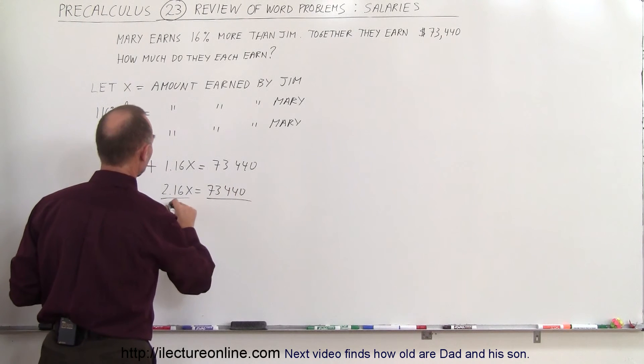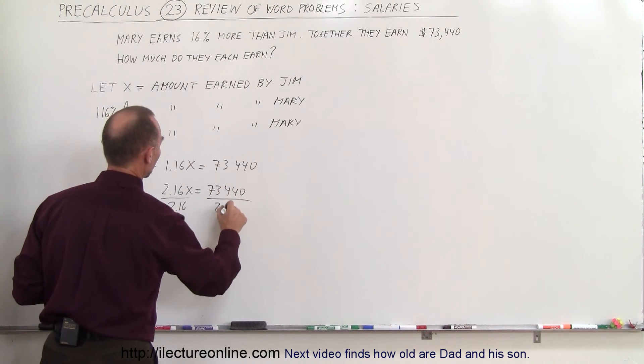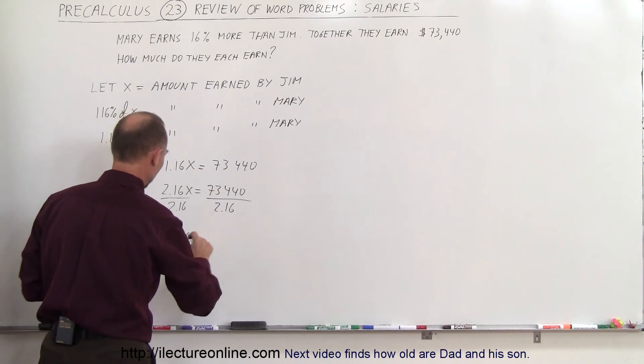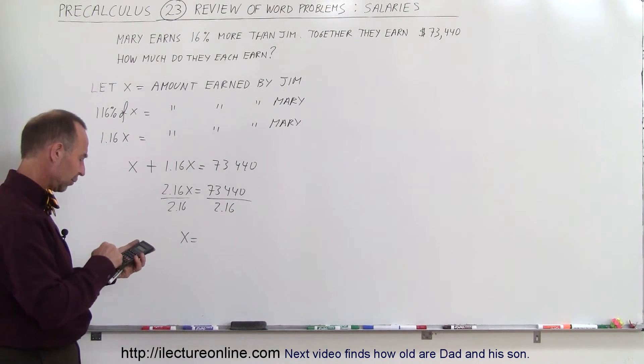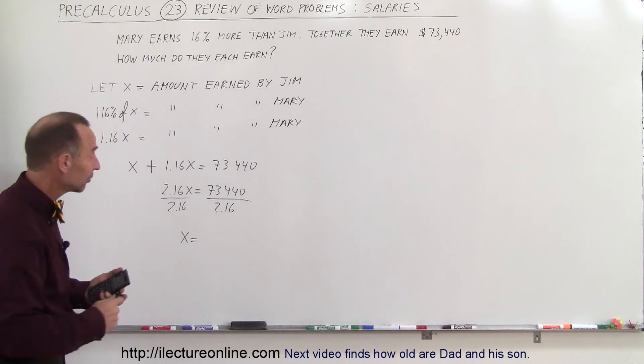Therefore, divide both sides by the coefficient in front of x, 2.16, so x is equal to, let's get a calculator out. So $73,440 divided by 2.16 equals $34,000.